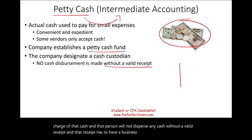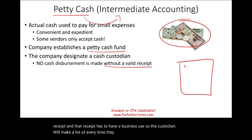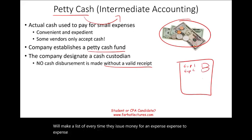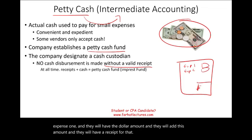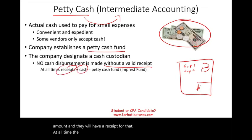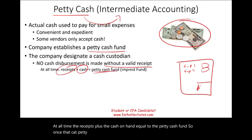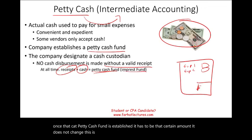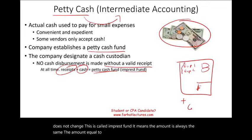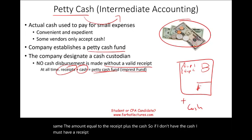The custodian will not disburse any cash without a valid receipt, and that receipt must have a business purpose. The custodian keeps a list of every expense with the dollar amount, and they will have a receipt for each one. At all times, the receipts plus the cash on hand must equal the petty cash fund. Once the petty cash fund is established, it stays at that certain amount — this is called an imprest fund. If I don't have the cash, I must have a receipt to support the cash disbursement.